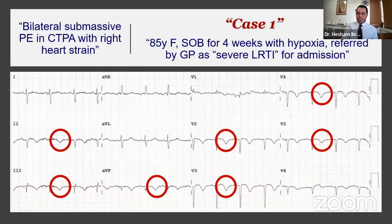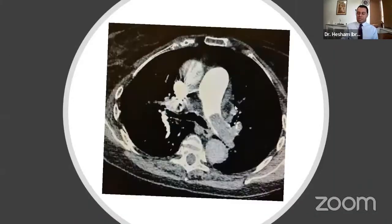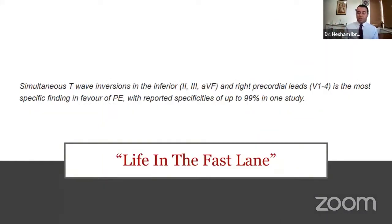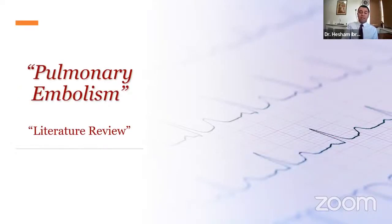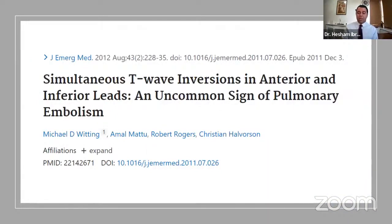This is the CTPA of that lady — a large blood clot visible in her left pulmonary artery, and another in the right. Quoting from Life in the Fast Lane: simultaneous T-wave inversion in the inferior leads (2, 3, aVF) and right precordial leads (V1–V4) is the most specific ECG finding for pulmonary embolism, with reported specificity up to 99% in one study.